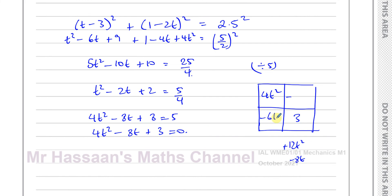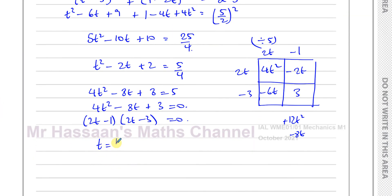And 2t times minus 3 gives minus 6t. So I've got my factors: 2t minus 1 and 2t minus 3 equals 0. And so the value of t is a half or 3 over 2. And it says find the values of t for which the distance of P from O is 2.5 meters. Well there we are, those are the two values of t.